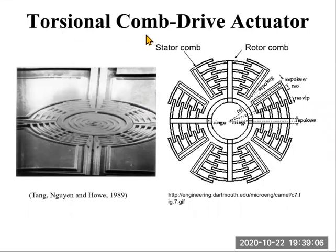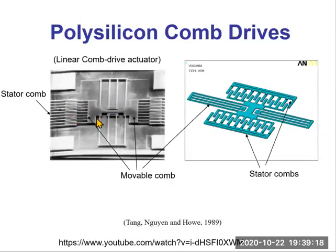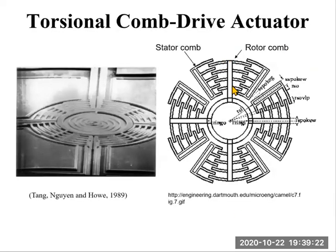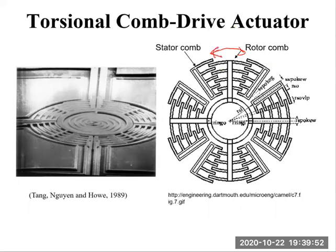Torsional comb drive actuator. The structure of this torsional comb drive actuator is very similar to the linear comb drive we just discussed. There is a rotor comb — the rotor comb is freestanding — and stator combs anchor to the substrate. The rotor comb can be driven to rotate by applying voltage to the stators, so the rotor can rotate back and forth.